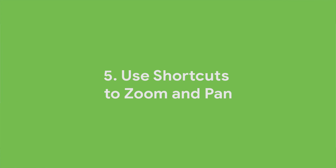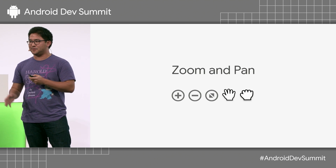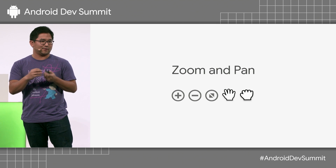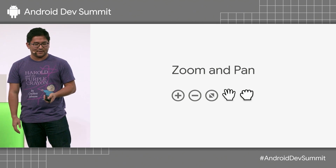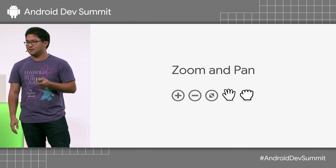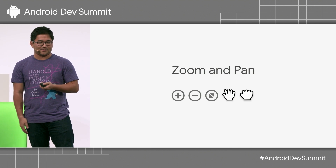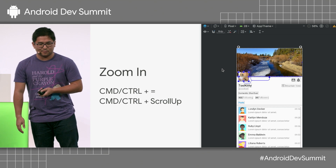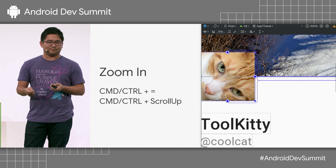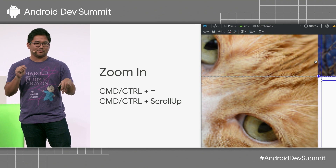You've been able to zoom and pan in the layout editor for a while, and it's really handy with constraint layouts when things are small or close together. In Android Studio 3.3, we've changed the keyboard shortcuts to match design tools like Photoshop and Sketch. To zoom in, use Command or Control plus the equal sign. With the mouse wheel, hold Command or Control and scroll up. On a trackpad, you can just pinch in to zoom.